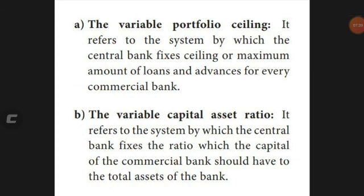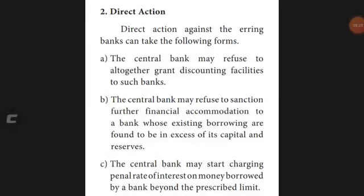The second method under rationing of credit is variable capital asset ratio, where the central bank fixes the ratio of capital that commercial banks must hold — in cash or gold — as their own reserve or asset. For example, a bank in a metropolitan city may be required to keep 500 crores as reserve, while a rural bank in a village may be required to keep 50 crores. This is called the variable capital asset ratio.